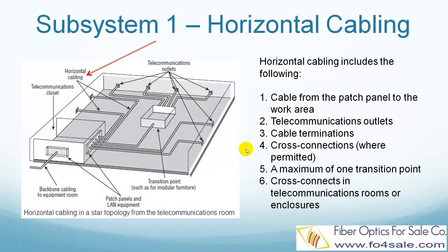Horizontal Cabling is the cabling that extends from the horizontal cross-connect, or main cross-connect, to the work area and terminates in telecommunications outlets. It includes cable from the patch panel to the work area, telecommunications outlets, cable terminations, cross-connections, and cross-connects in telecommunication rooms or enclosures. This figure shows a typical horizontal cabling infrastructure in a star topology from a telecommunications room, typically connected into patch panels and switches or hubs.